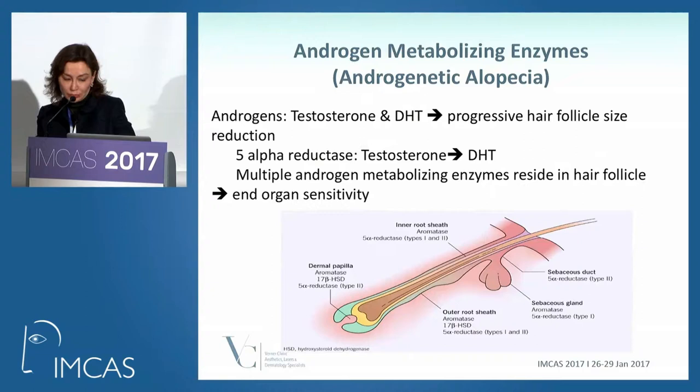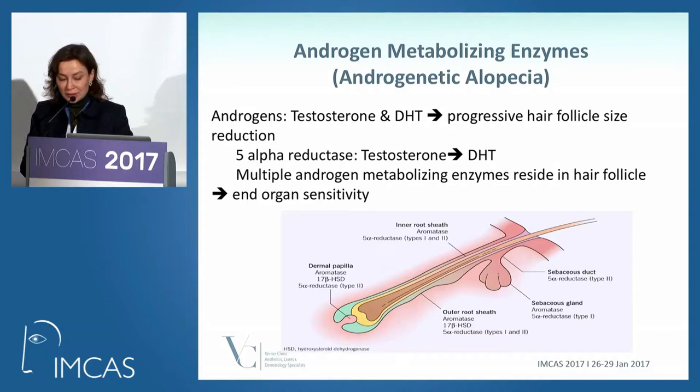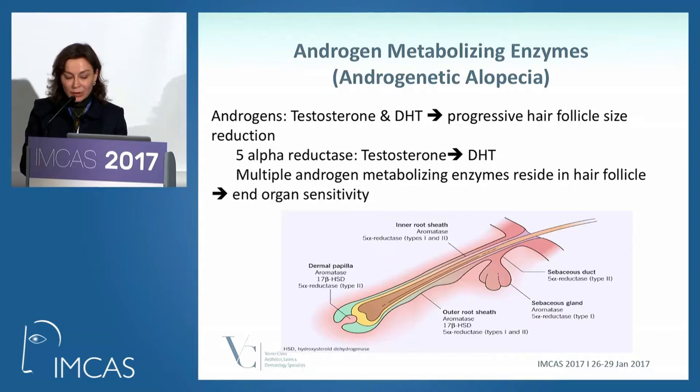Because of kenogen, hair density and hair volume look lower. For male pattern hair loss, we know that 5-alpha reductase converts testosterone to dihydrotestosterone (DHT), and there are multiple androgen-metabolizing enzymes that reside in the hair follicle, leading to this end-organ sensitivity.